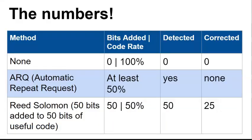Here is a table that summarizes the numbers on the preceding slide. In this case, our Reed Solomon example assumes we have 50 bits of useful data, and we've added another 50 bits for error control.